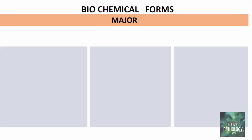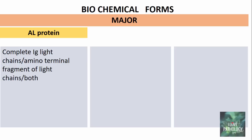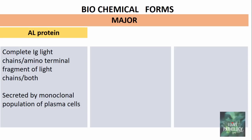AL protein is one of the major proteins. It is basically a complete immunoglobulin light chain, or it could be just the amino-terminal fragment of light chains, or both. These are secreted by a monoclonal population of plasma cells, most commonly found in plasma cell tumors or plasma cell dyscrasias like multiple myeloma. The 'AL' stands for amyloid light chain protein.